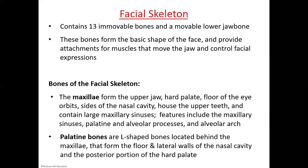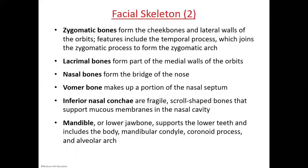You have palatine bones — two of them. These are L-shaped bones just posterior to the maxillae and are difficult to see from the outside of the skull. They form the floor of your nasal cavity, the lateral walls of the nasal cavity, and the very back portion of the hard palate. You also have zygomatic bones — two of them — which form your cheekbones and the lateral walls of your orbit. You have a zygomatic arch that we'll see in an upcoming picture.